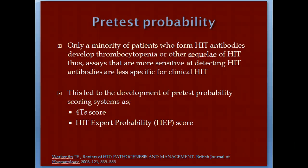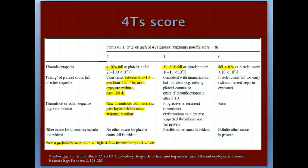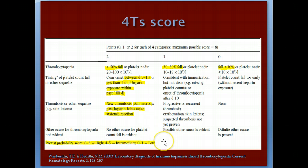Given the high background rate of HIT antibodies, pre-test probability tools were developed: the 4T scoring system and the HEP score. The 4T score assesses four categories each scored 0–2: thrombocytopenia (>50% fall = 2 points, 30–50% = 1 point), timing (day 5–10 = 2 points), thrombosis or systemic reaction (new thrombosis = 2 points), and other causes. Scores 0–3 = low probability, 4–5 = intermediate, 6–8 = high probability.